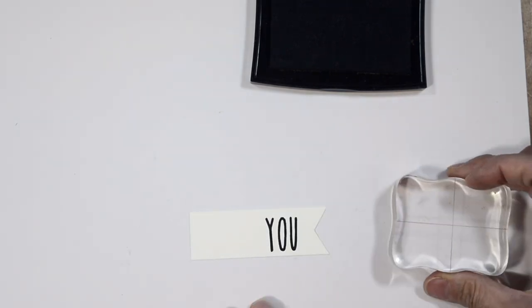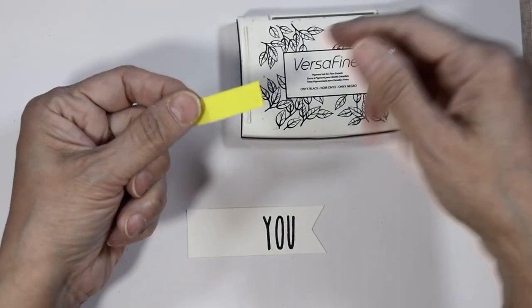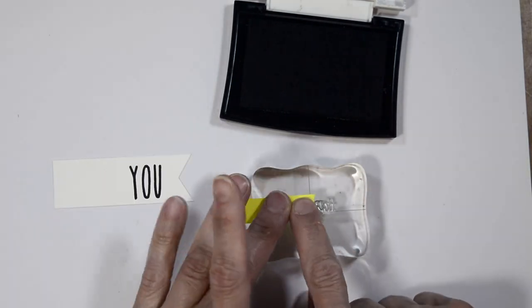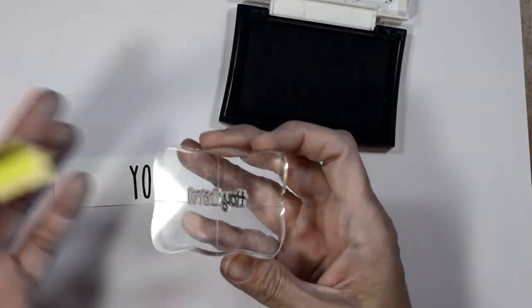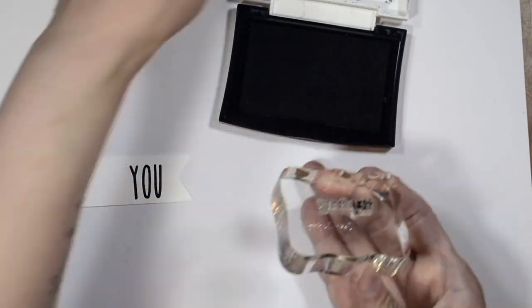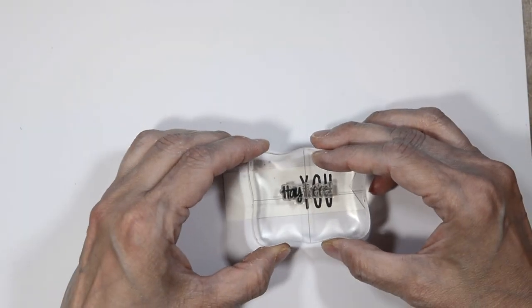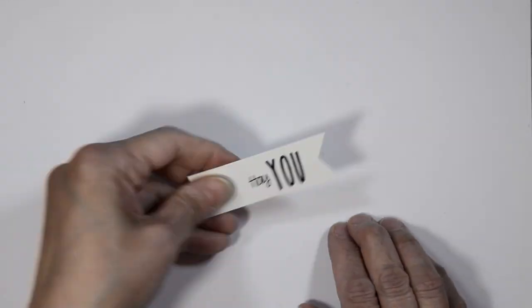I'm going to remove that stamp and bring in the hey there stamp set. I'm going to use some post-it tape and mask off the part that says there. I'm going to ink up my stamp and line that up and stamp it. So now we have our sentiment that reads hey you. This is basically like a hello card.